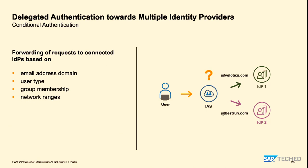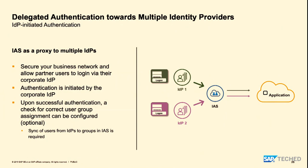This is SP-initiated flow, where the service provider starts the authentication. There is also IDP-initiated flow, where the user gets a special link pointing to the corporate identity provider; after authentication there, the user is redirected to the application. Identity authentication service sits in the middle as a central integration point, verifying users are coming from the expected identity provider, and allowing them to access the application. On top of this, we can apply two-factor authentication if needed.